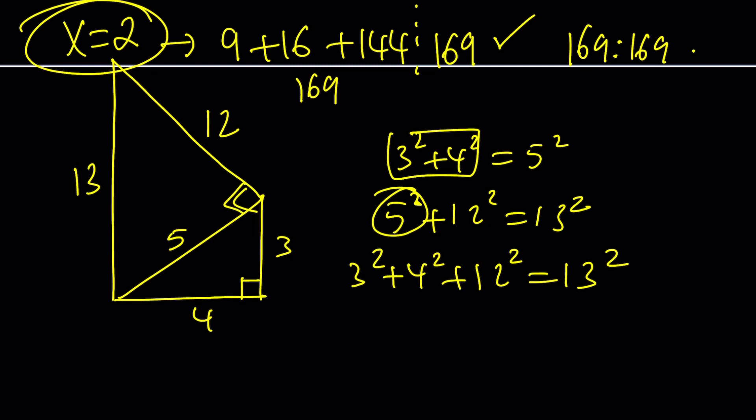If you replace 5 squared, you get 3 squared plus 4 squared plus 12 squared equals 13 squared — kind of like the Pythagorean theorem but in 3D. You can make a 3D picture but it's hard on screen. These numbers are special. A good extension would be: can we make a Pythagorean triangle with integer lengths, one of whose legs is 13? Let us know in the comments. This uses two special Pythagorean triples you should be familiar with.